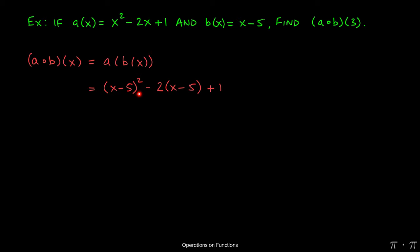Now at this stage you can use a special product formula to FOIL this, or just multiply it out term by term. By using the formula we know that this will give us x² - 10x + 25. Here we can distribute the -2. So -2 times x will give us -2x. -2 times -5 will give us positive 10. The 1 comes along.